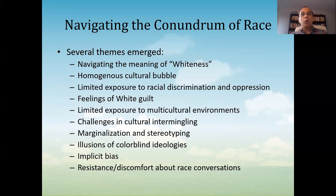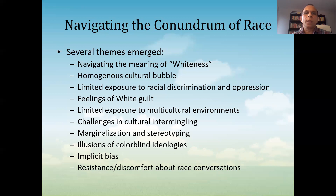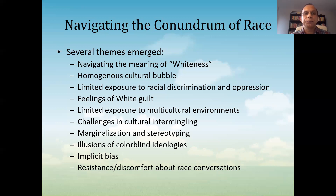A number of themes emerged about race from the students' papers. Their papers revealed that the foundation of racial identities is laid in the experiences of childhood through interactions within family, schools, communities, and societies at large, particularly in middle school and high school. That is when those identities get established and they continue to evolve throughout their lives. Most of these themes related to white students, with the exception of marginalization and stereotyping.